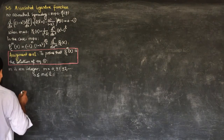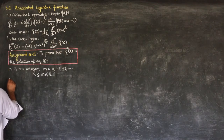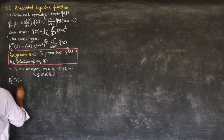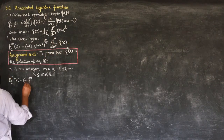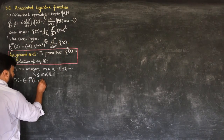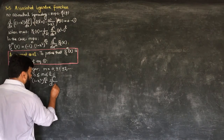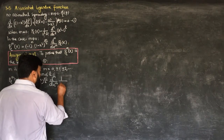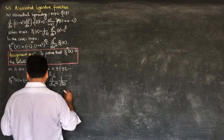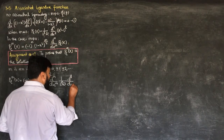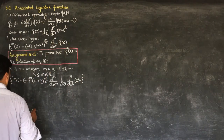However, the Rodrigues formula can also be used as a valid definition for negative values of M. Writing out P_L^M(x) fully: it equals (-1)^M · (1 - x²)^(M/2) · d^M/dx^M, applied to 1/(2^L · L!) · d^L/dx^L (x² - 1)^L.